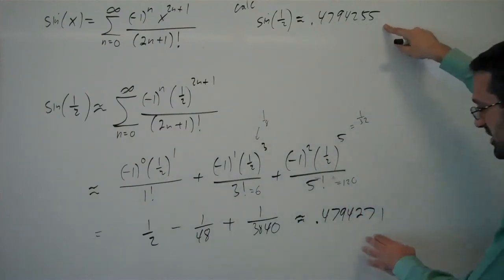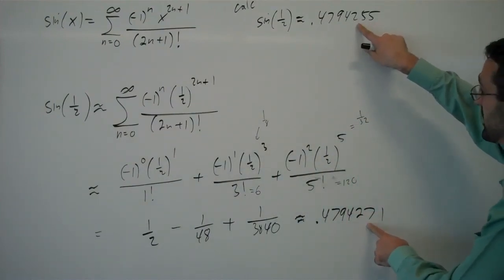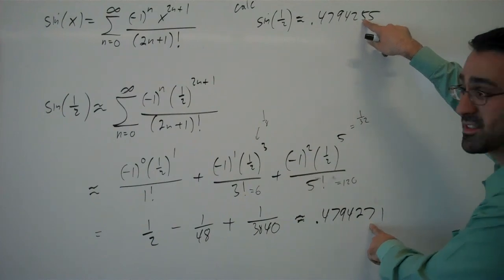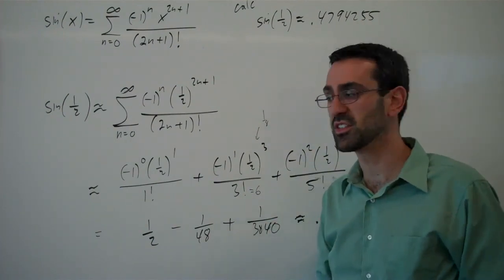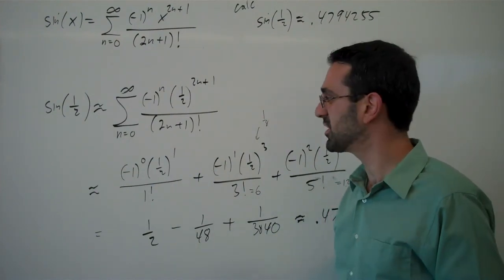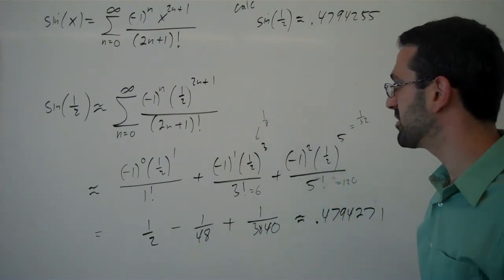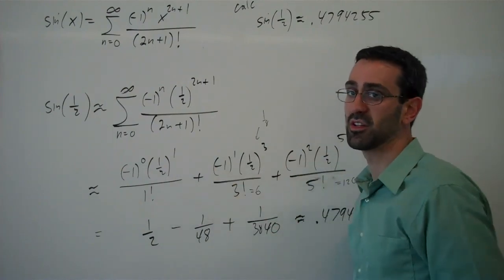And so it looks like we are pretty good accuracy up to the fifth decimal place. And so using only three terms of the McLaurin series, we're getting a pretty good approximation for the sine function, for the value of the sine function, just using polynomials.